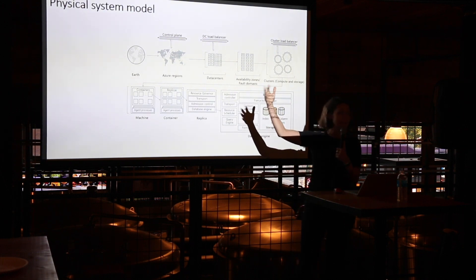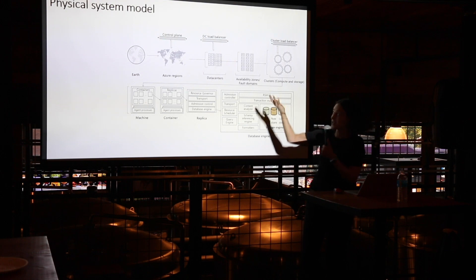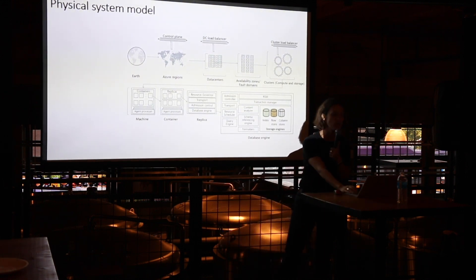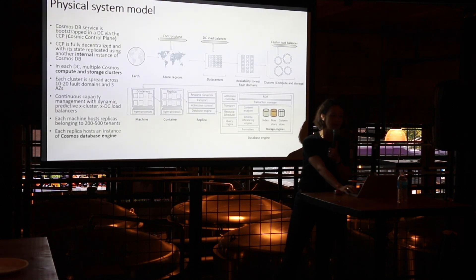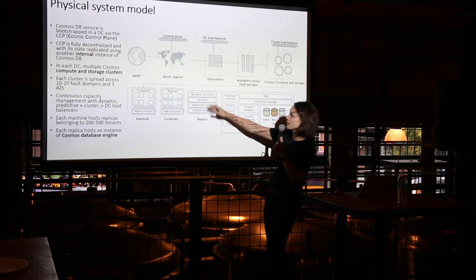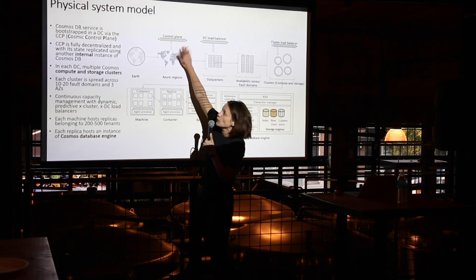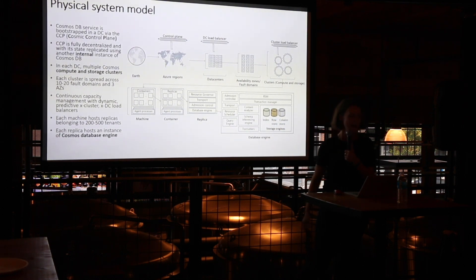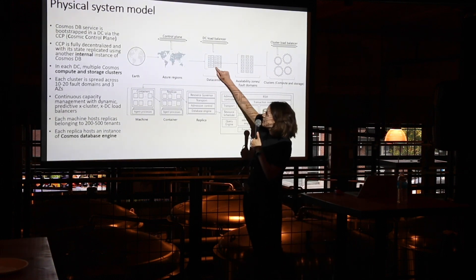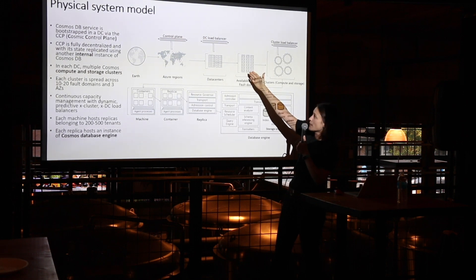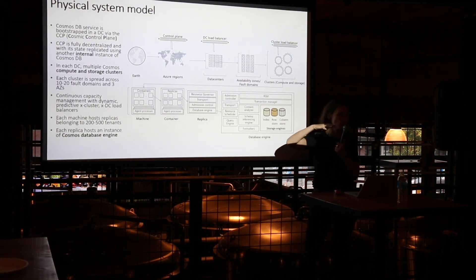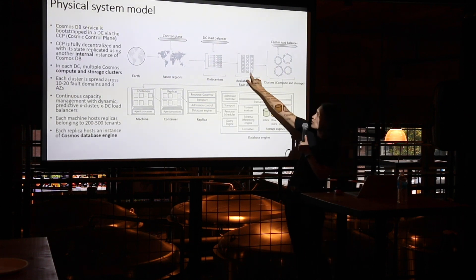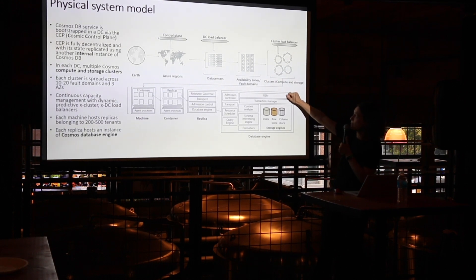What does the system actually look like behind the scenes? This is the physical view so that you don't think it's magic. You take Earth — these are Azure regions. We're running today across 54 regions worldwide, and the control plane is bootstrapped in each data center. The control plane itself is fully decentralized and its state is also replicated inside Cosmos itself. If you zoom in on Azure regions, within the regions you'll find the data centers. Within the data centers, we're running across about 11 to 24 fault domains. So if there is a partial outage — somebody cuts a chord, a tornado, a hurricane — your replicas and partitions are distributed across different fault domains and availability zones.